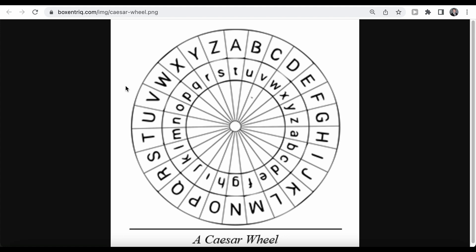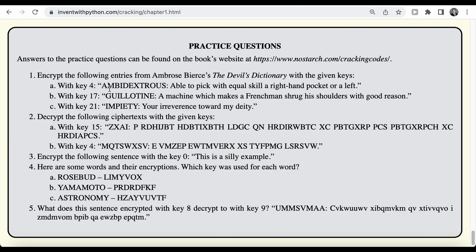So for instance, here with key four, we're going to encrypt ambidextrous able to pick with equal skill a right hand pocket or left. If we take a look at a cipher wheel, we can start out with the first letter A and then we can apply the key four. And if you want to encrypt a code, we would move forward in the alphabet. So that means we start from the letter A and we go forward four letters. So one, two, three, four, and you would end up with a letter E. Now the second letter in our word is M. And again, we would apply key four. So we go forward one, two, three, four. So the second letter is going to be Q. So the first two letters encrypted with Caesar cipher with key four would be EQ.